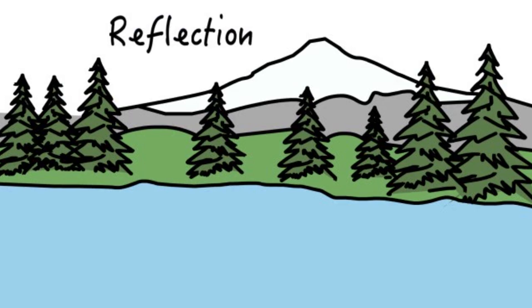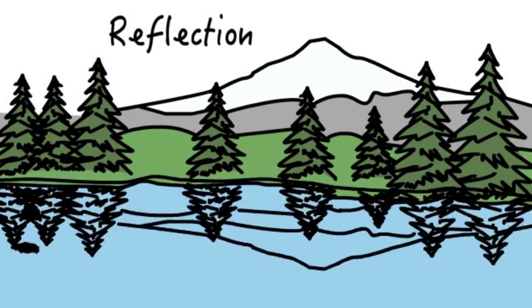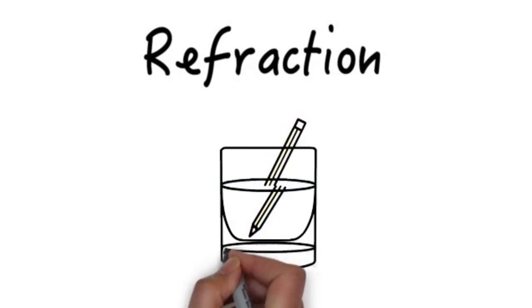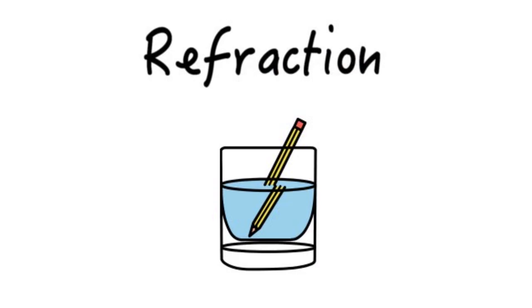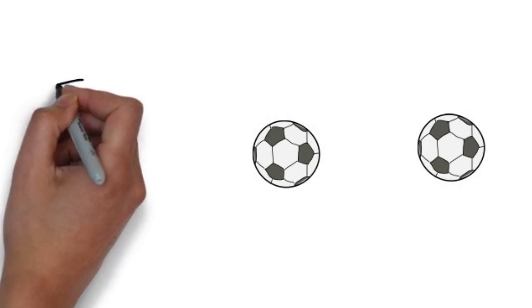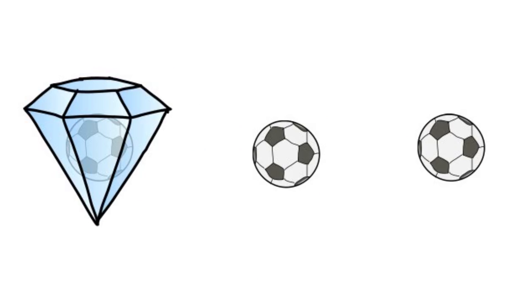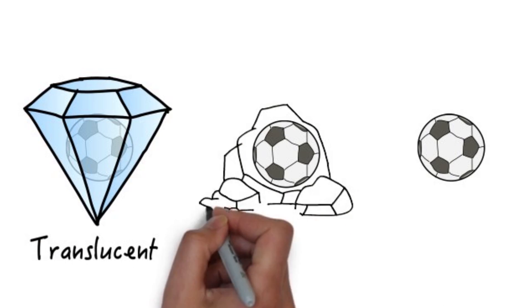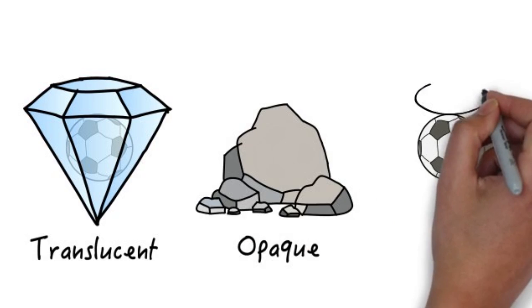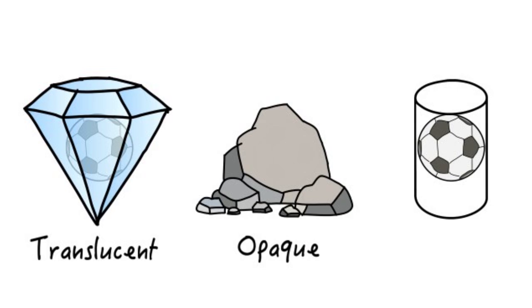Reflection is the change in direction of light bouncing off a surface, like a lake. Refraction is the bending of light rays as they pass through different substances at an angle. When light strikes an object, most of the light is reflected and we're able to see its source when light from it enters our eyes. Translucent objects allow some light to pass through them, often creating a very faint shadow, like a diamond. Opaque objects don't allow light to pass through and often result in strong shadows, like rocks. Transparent objects allow most of the light to pass through them and barely form a shadow, like clear glass.